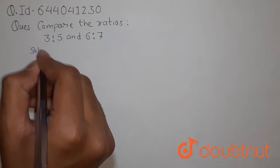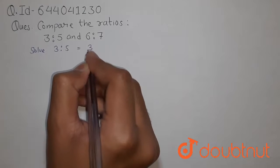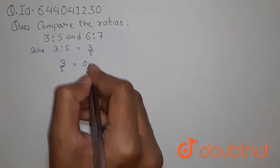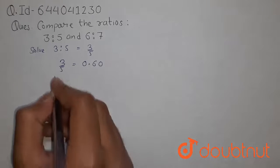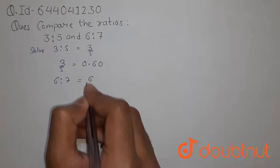First we will write 3 is to 5 as 3 upon 5. So, value of 3 upon 5 will be 0.60. And 6 ratio 7 is 6 upon 7.